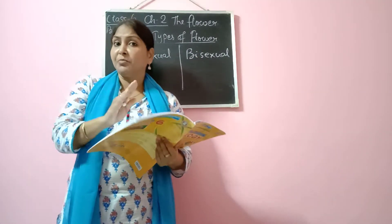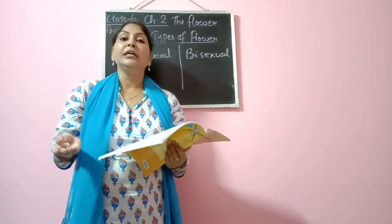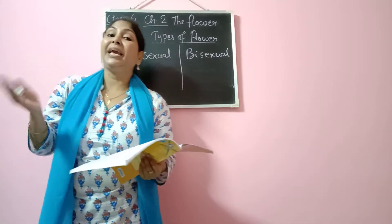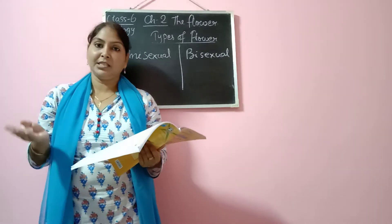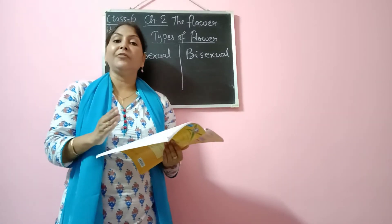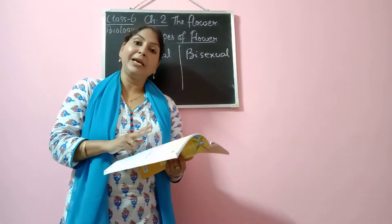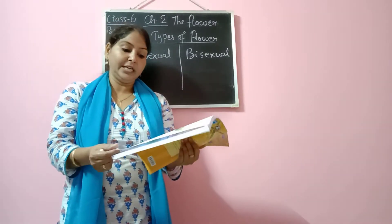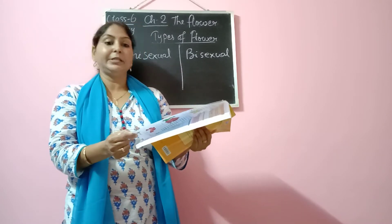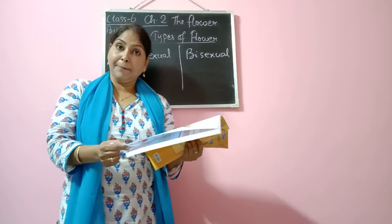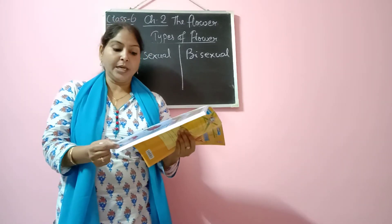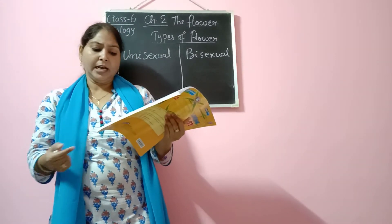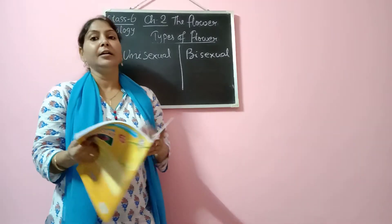So, the difference between unisexual and bisexual flower: a bisexual flower has both male and female reproductive parts. A unisexual flower has only one reproductive part — either male or female. Examples of unisexual flowers, found on page number 25, are papaya, watermelon, cucumber, bitter gourd, pumpkin, etc. Examples of bisexual flowers are china rose, mustard, pea, lily, and gulmohar.